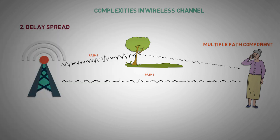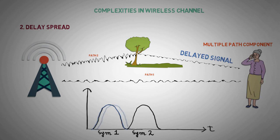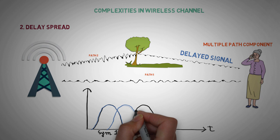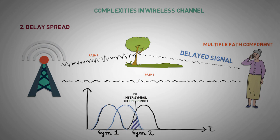Delay spread. As a consequence of multipath propagation the duration of a symbol gets extended. This may interfere with the next symbol. This is called inter-symbol interference or crosstalk. Guard periods are introduced to avoid crosstalk.